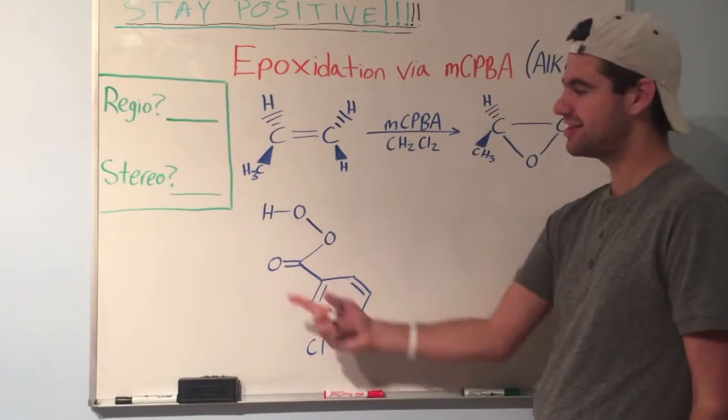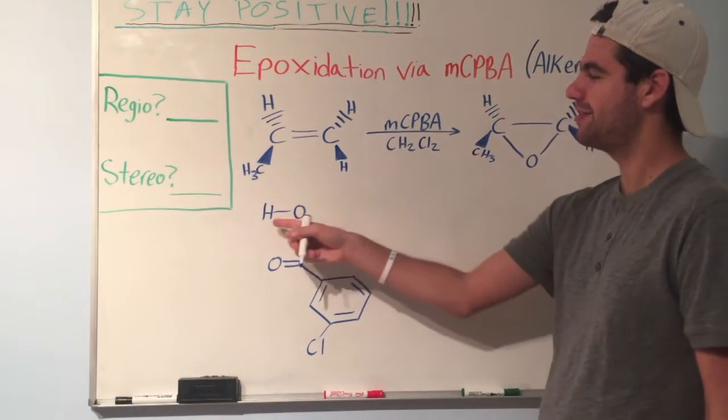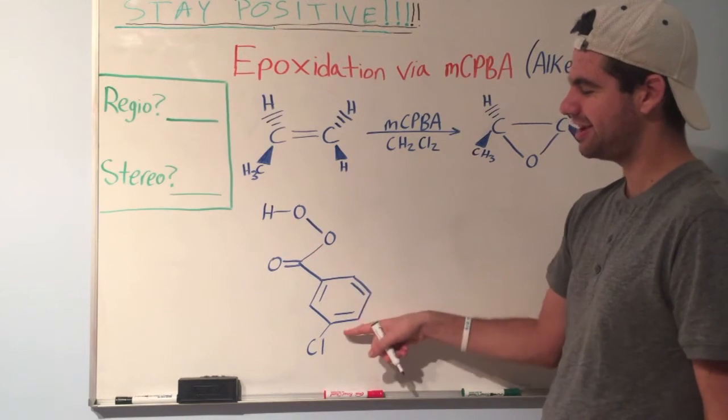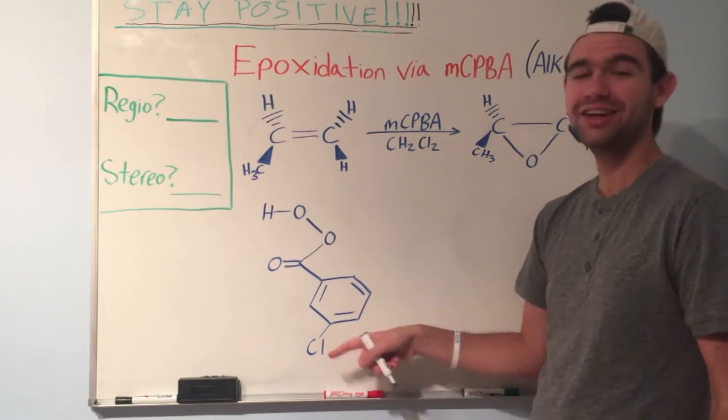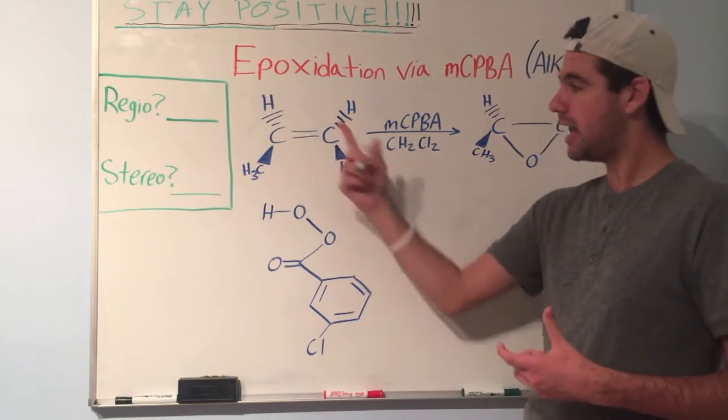Alright, so this is the structure of MCPBA: HOO, ketone, benzene, and then a chlorine.